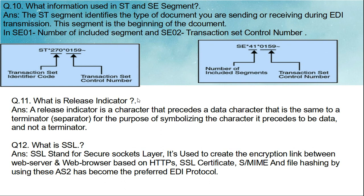The next question is: what is a release indicator? A release indicator is a character that precedes a data character that is the same as a delimiter separator. Its purpose is to signify that the character it precedes is to be treated as data and not as a terminator.